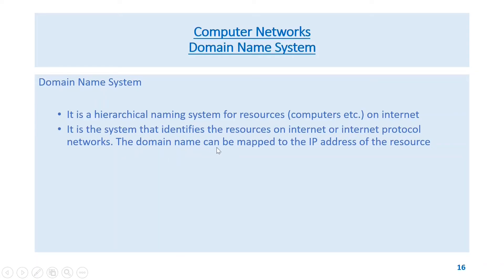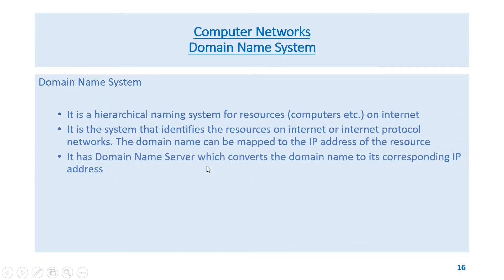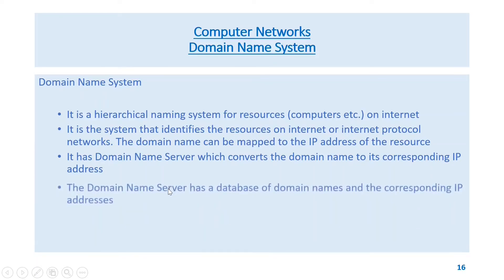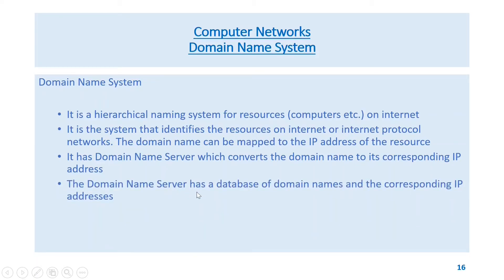A domain name can be mapped to the IP address of the resource. DNS has a domain name server which converts the domain name to its corresponding IP address. The domain name server has a database of domain names and their corresponding IP addresses.